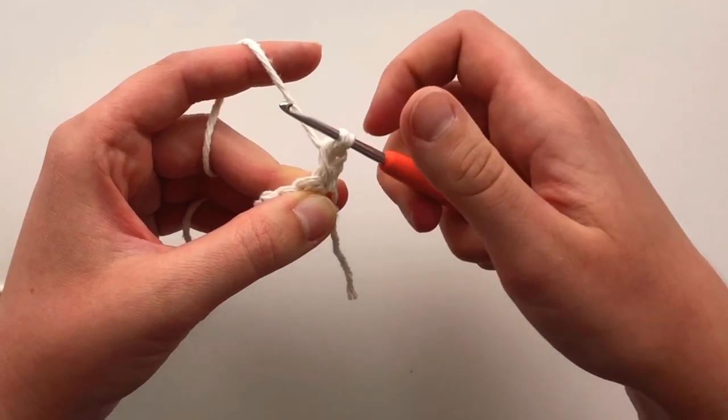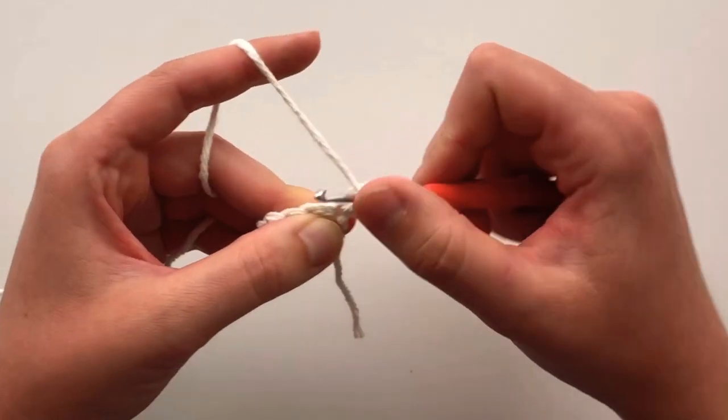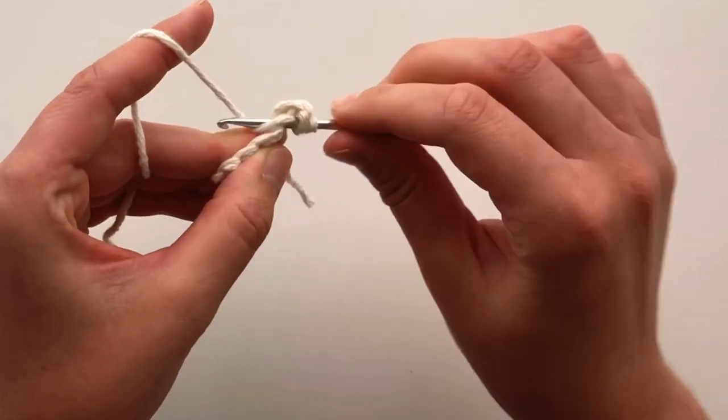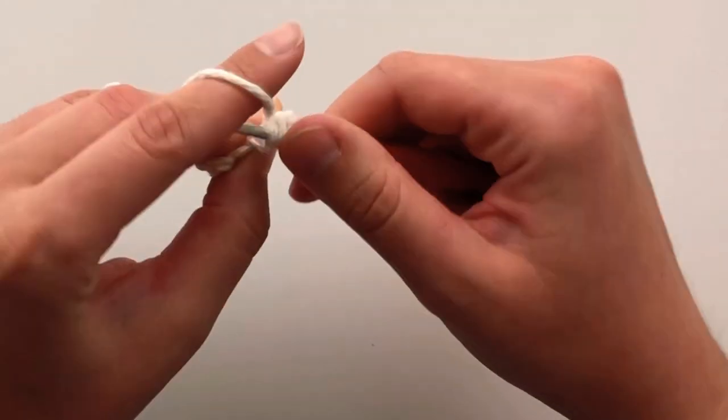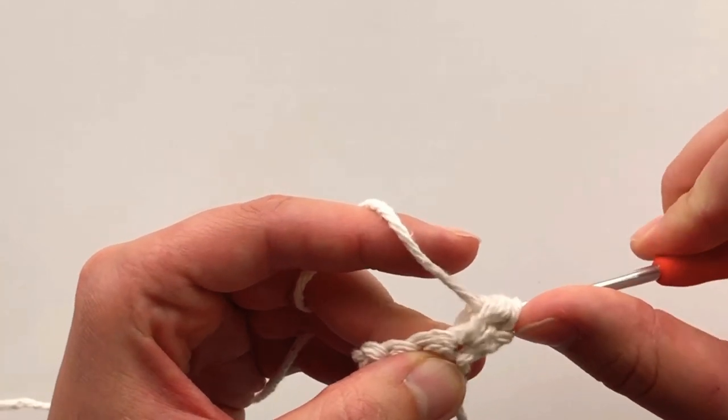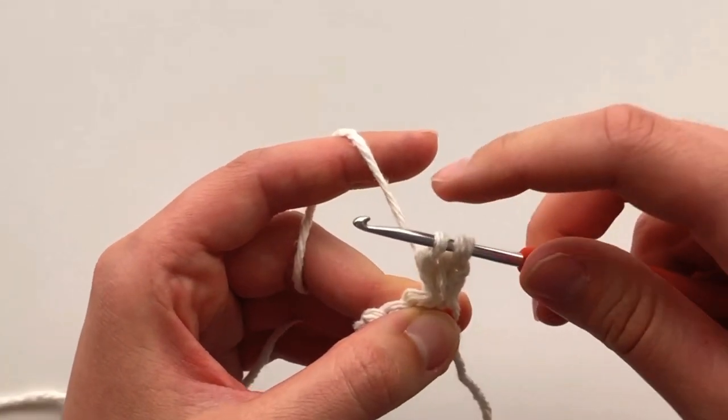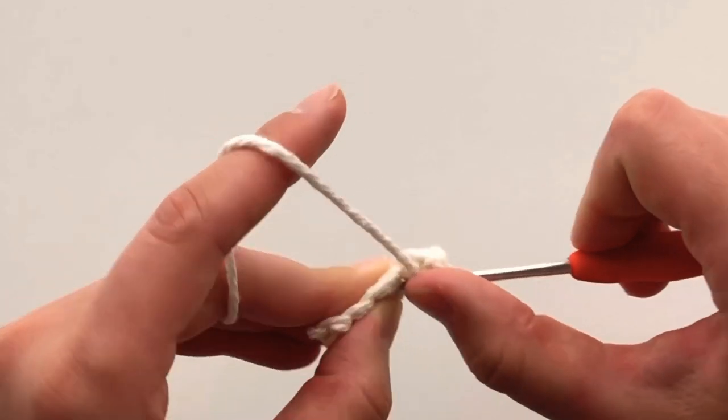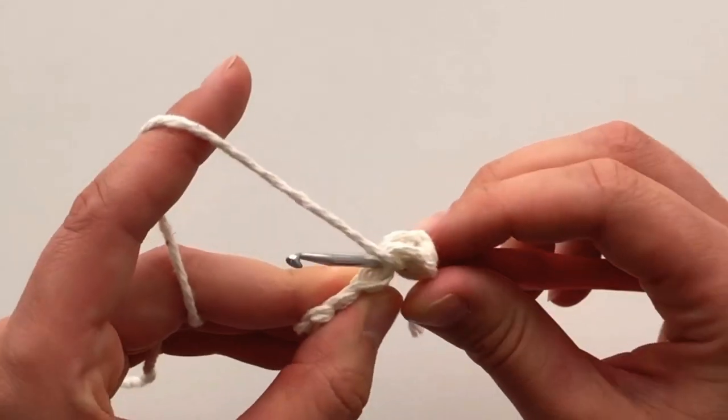To complete your modified bobble stitch, you will be creating 3 unfinished double crochets, and then pulling through 4 loops, rather than the typical 5 unfinished double crochets, and pulling through 6 loops.